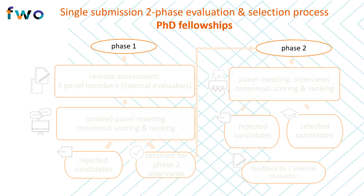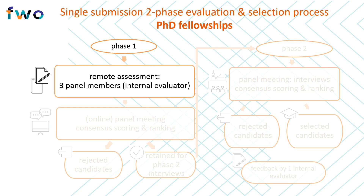The procedure consists of two main phases. The first phase consists of a written procedure followed by an online panel meeting in which a pre-selection is made. Then we invite the candidates who were retained in the pre-selection for the second phase, namely the interview. In the first phase the scientific chair of the panel distributes all applications amongst the members of the panel. All applications to be reviewed at this stage meet the formal admissibility requirements.